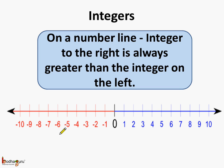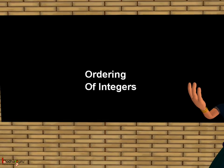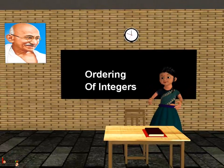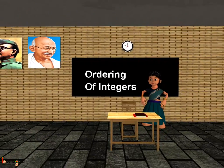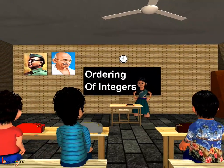That was all about ordering of integers, using the number line and also without using the number line. That's all for now. Bye-bye, children.